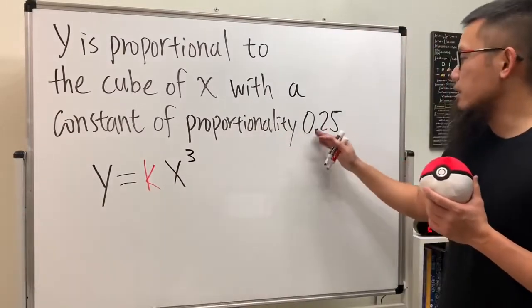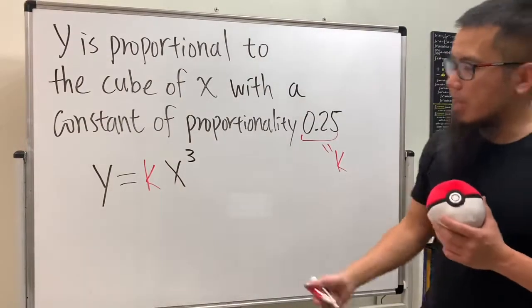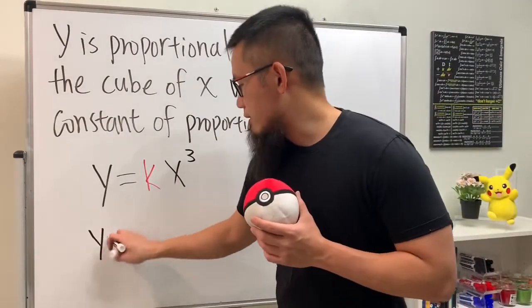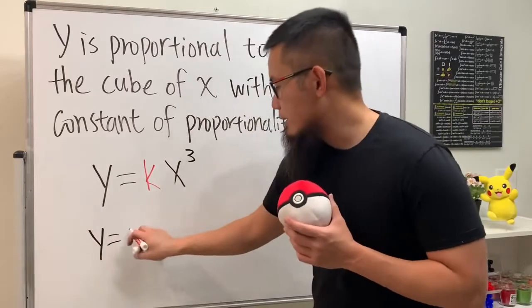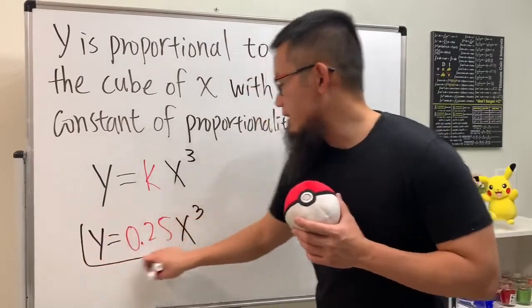And this right here tells us the k value, so we can just put that down right here. So the final answer is just going to be y equals 0.25 x to the third power, and that's it.